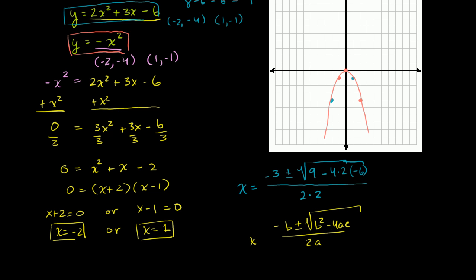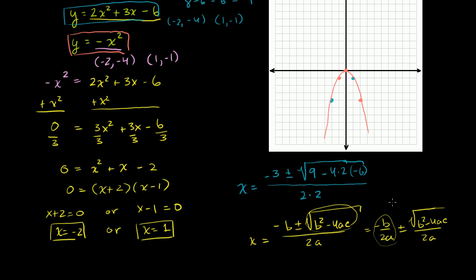If the discriminant is positive you always end up with two solutions that are equidistant from negative b over 2a. We can write this as negative b over 2a plus or minus the square root of b squared minus 4ac over 2a. The point equidistant from both solutions — right in between — is the line of symmetry, which is the x value of the vertex. So the vertex formula x equals negative b over 2a comes directly from this. For our equation, the x value of the vertex is negative 3 over 2 times 2, which is negative 3 fourths.